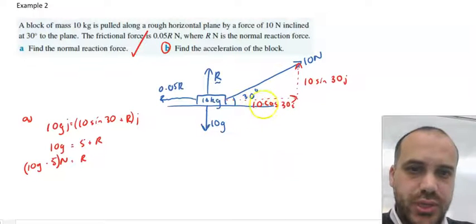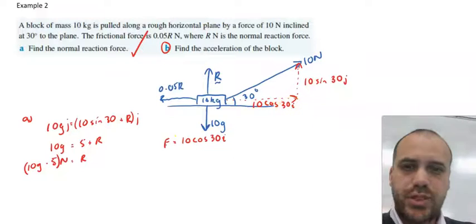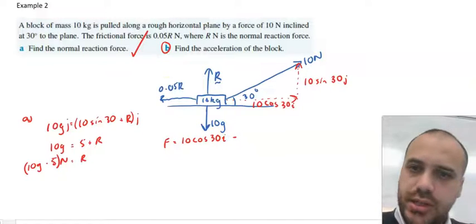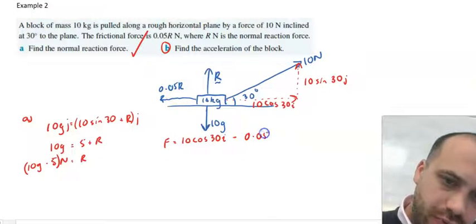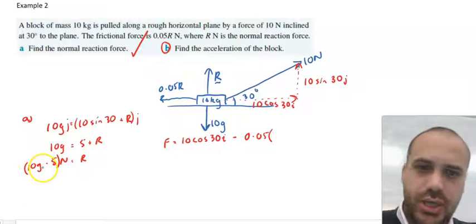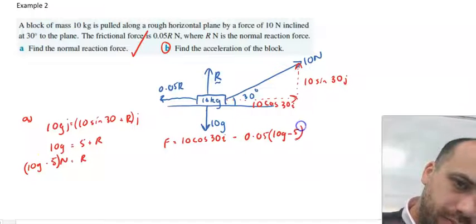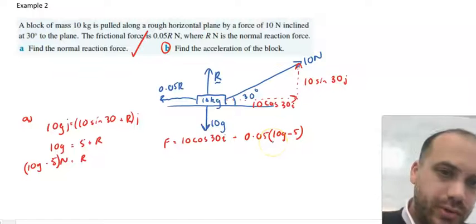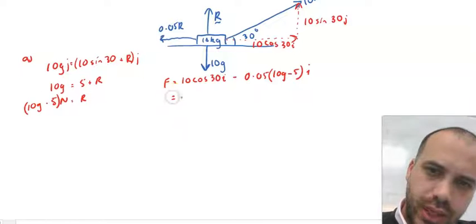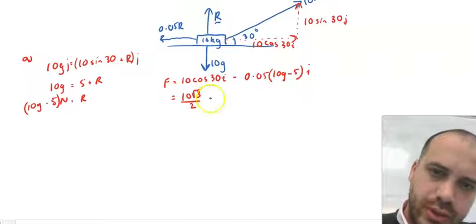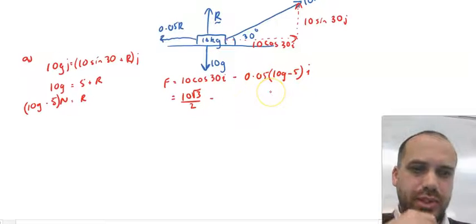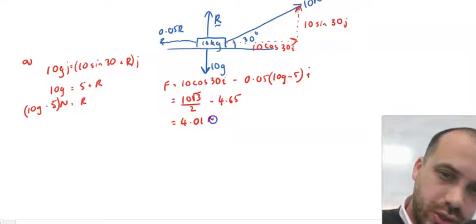Now, of course, we know the force here is 10 cos 30i. So the force being applied to the object will be 10 cos 30i minus 0.05, 0.05 of the reaction force. And we know the reaction force was 10g minus 5. That's happening in the i direction as well. So we're going to get a force in the i direction. If we jump through some hoops here, we'll get 10 root 3 on 2. We'll need to approximate this as a decimal if we're really going to move forward with this. And I get an answer of 4.01 newtons here.